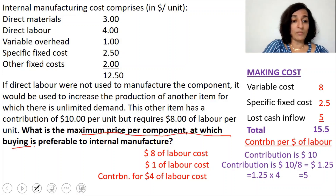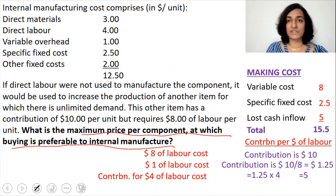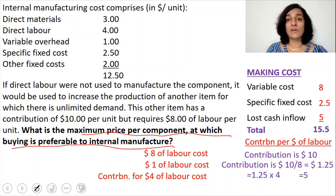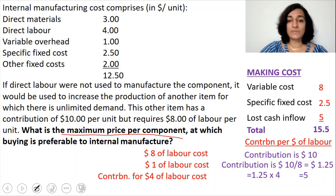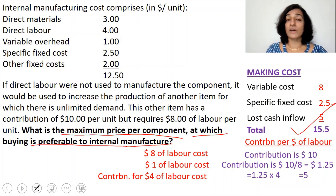The question asks for the maximum price per component at which buying is preferable to internal manufacture. The maximum buying cost we can afford is $15.5. Therefore, the maximum price per component at which buying is preferable to internal manufacture is $15.5 per unit.